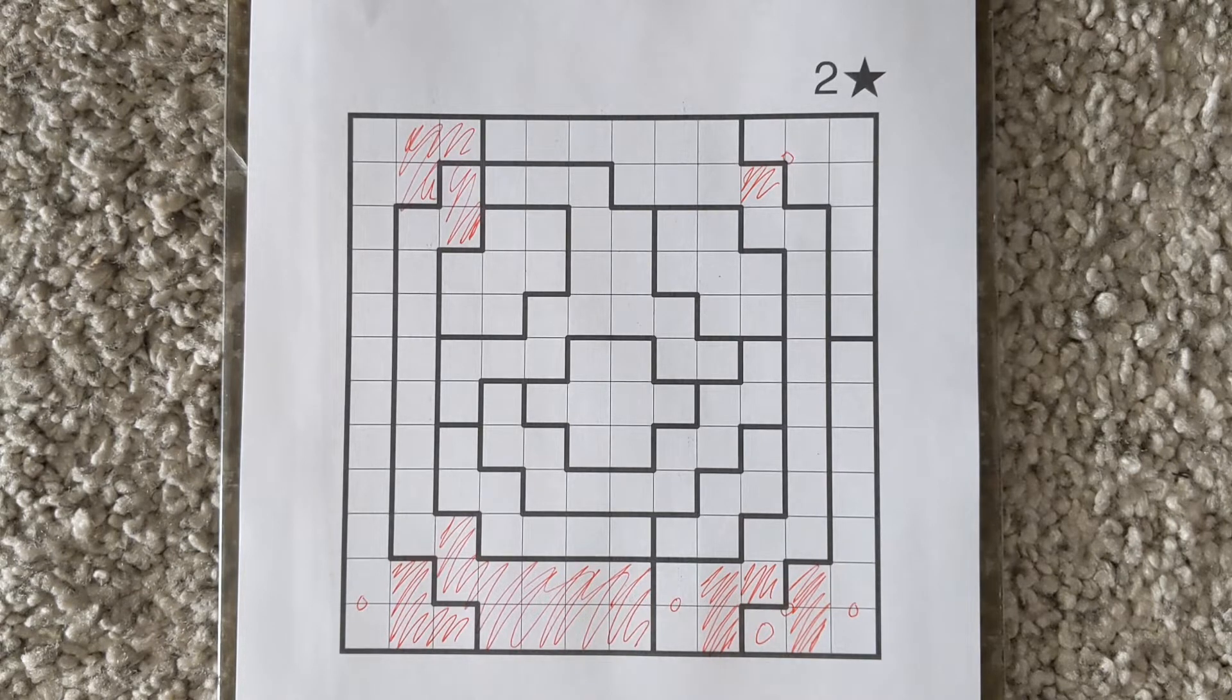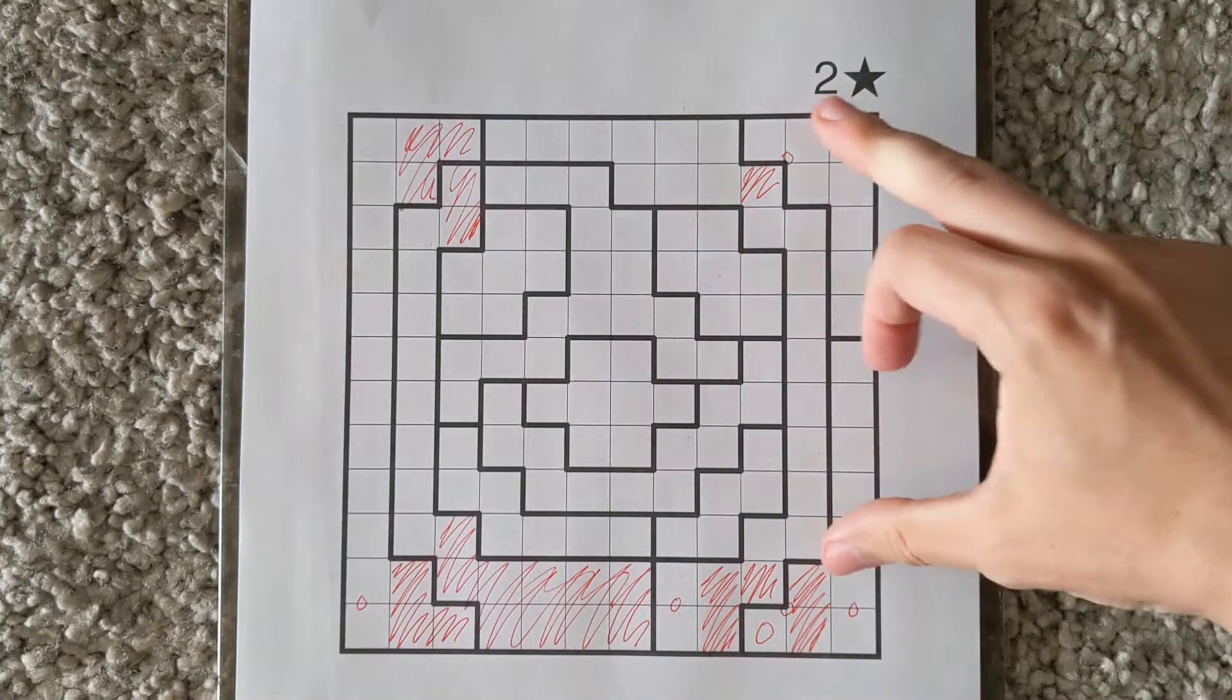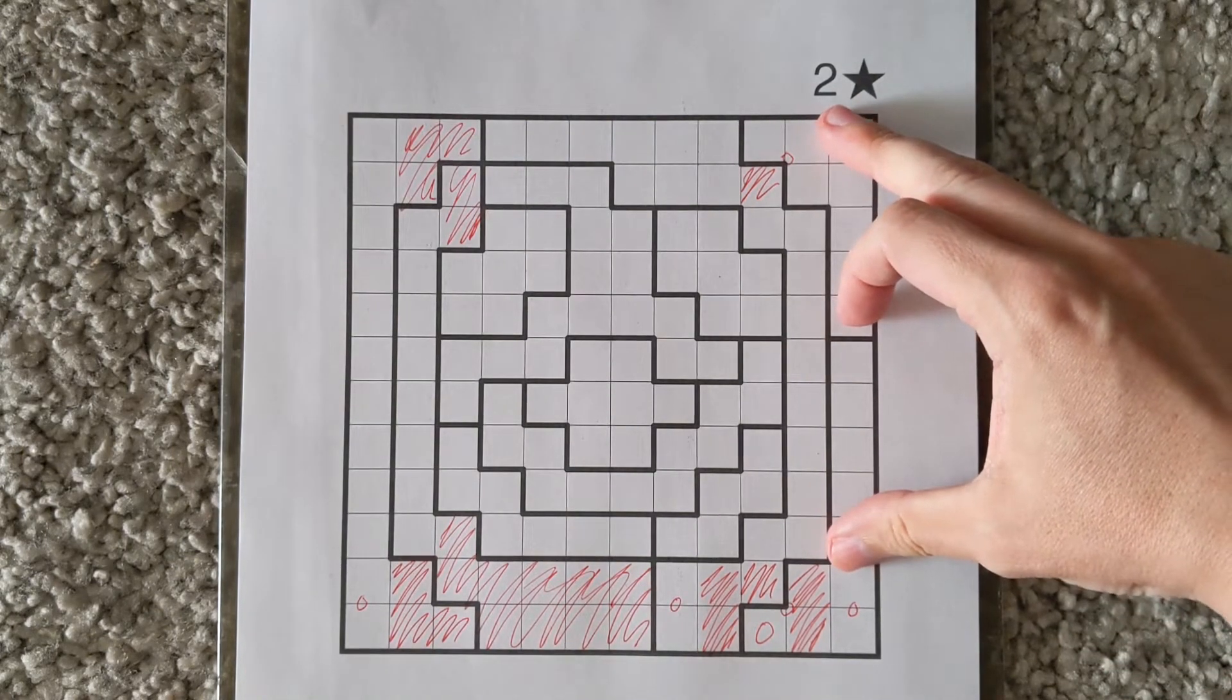The next observation, after doing this which will really break open the puzzle, is to think about how we fill in this second column from the right.